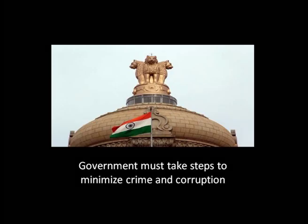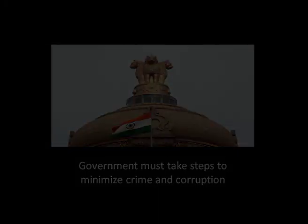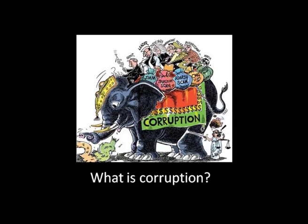The government and concerned officials must take necessary steps to minimize the adverse effects of these problems. In the first section we shall see what crime is and its types; in the second, what corruption is; the third, the nature of corruption; the fourth, the consequences of crime and corruption; and in the fifth, the changing profile of both crime and corruption.